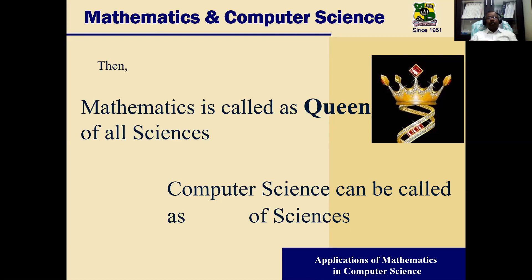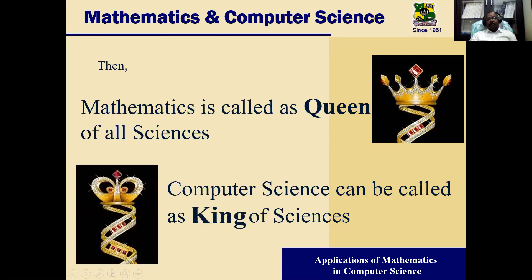We have taken an overview of some of the applications of mathematics in computer science. Computer science is purely depending on mathematics. Mathematics is called the queen of all sciences, and computer science can be called the king. But all kings are under the queen — so mathematics remains supreme. Are you happy now?